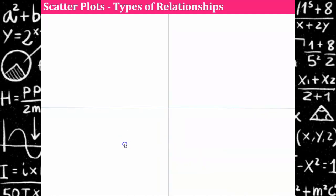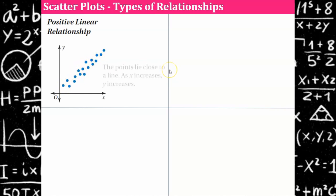There are four different types of relationships on a scatter plot. The first one is what we just looked at with the viper. It's a positive linear relationship. Imagine a line through the center of this data and it would have a positive slope. The points lie very close to the line and as x is increasing, y is increasing.